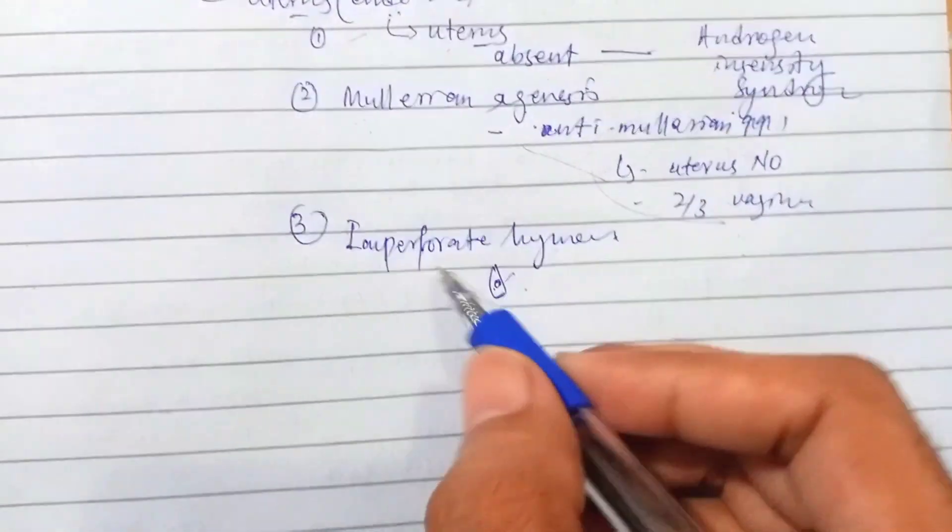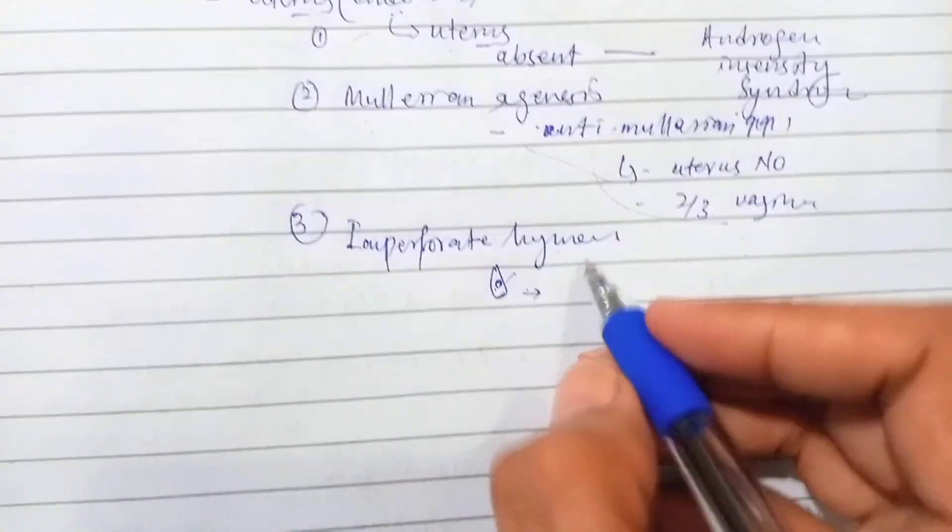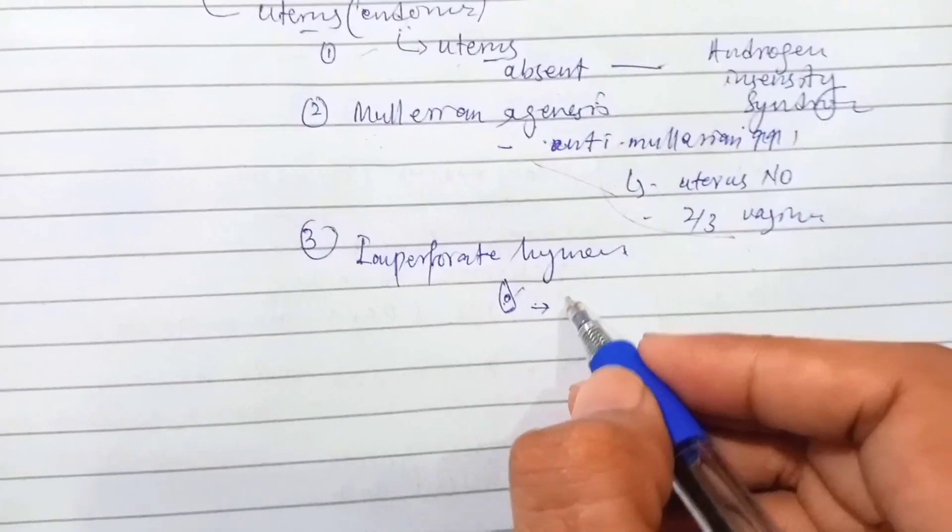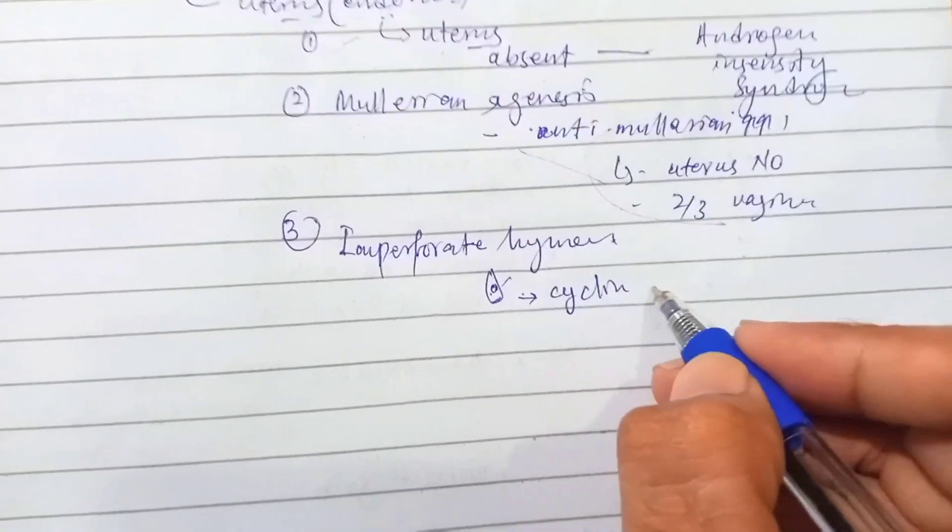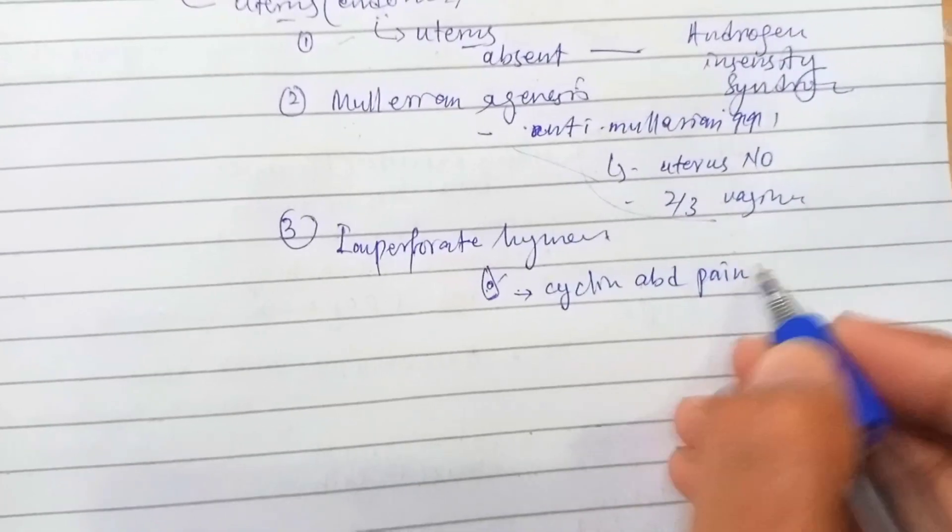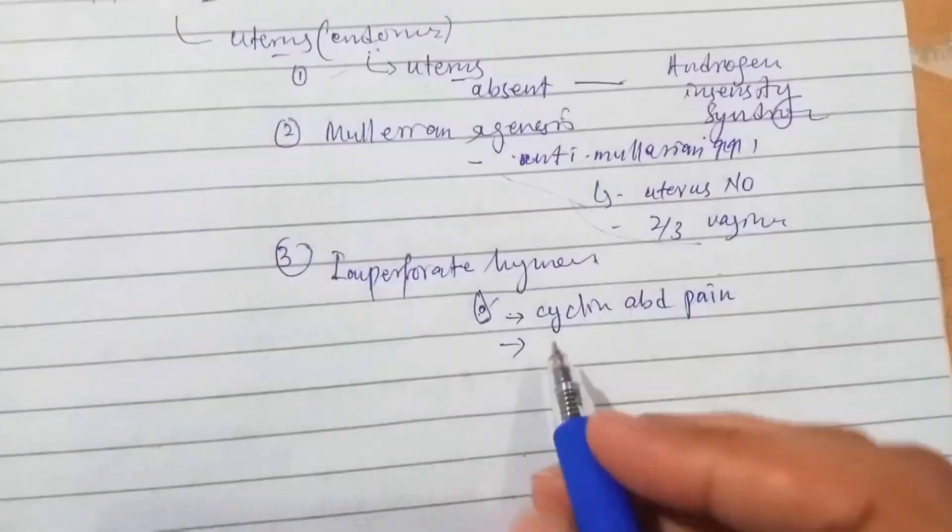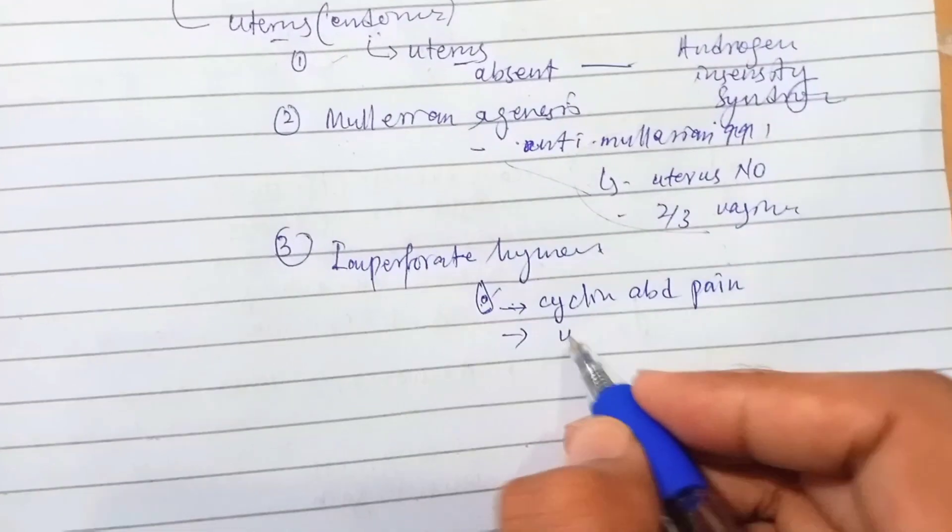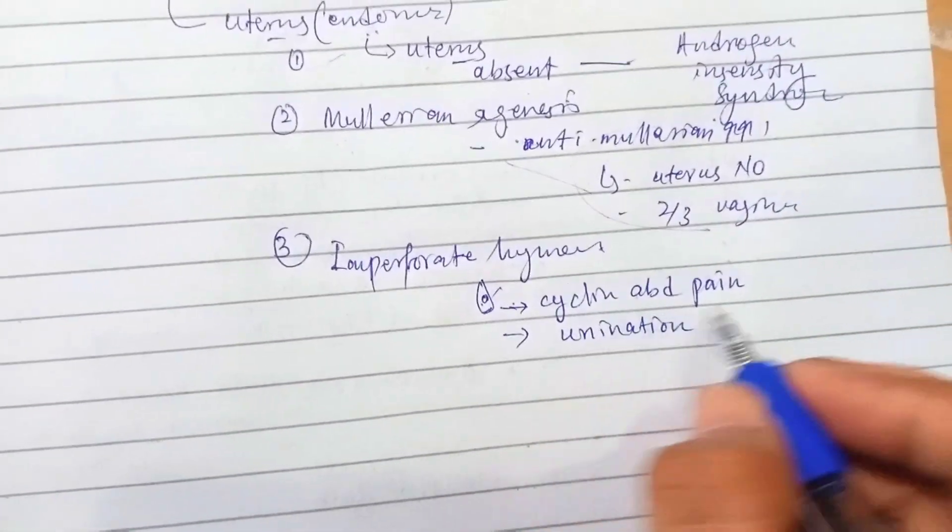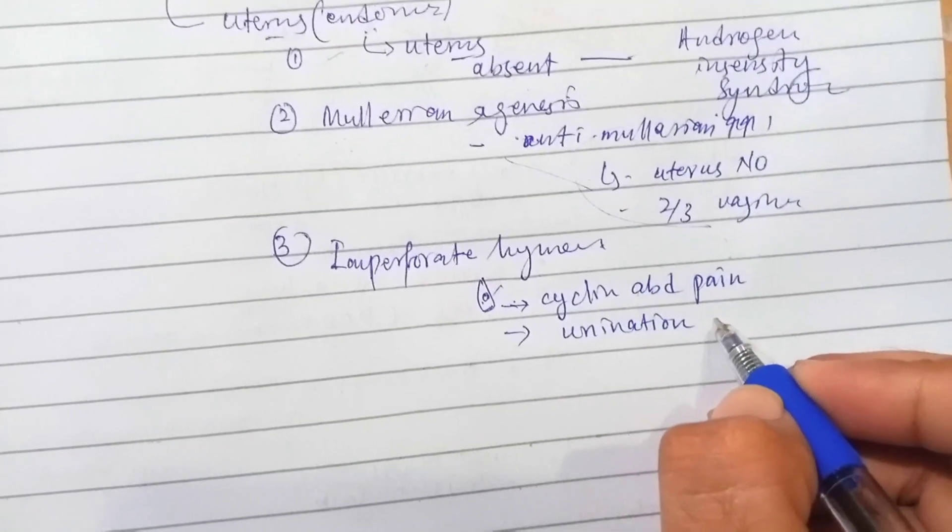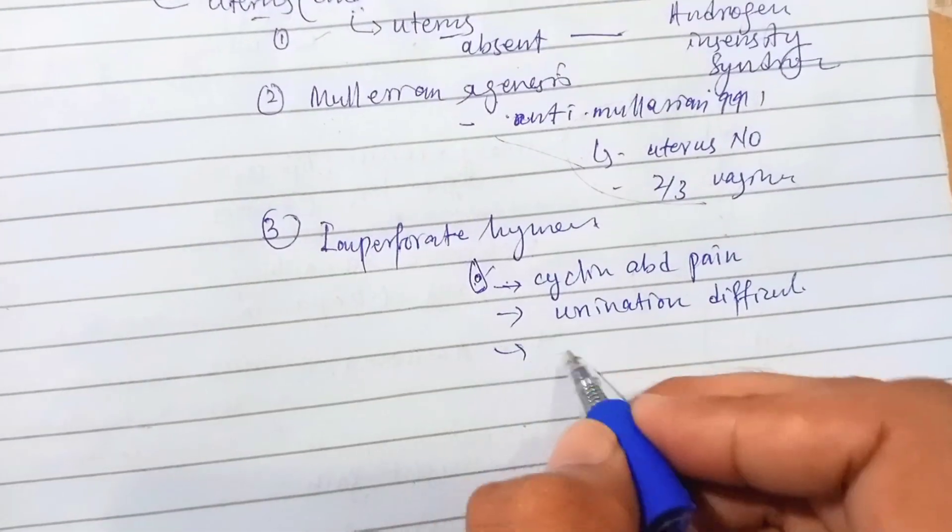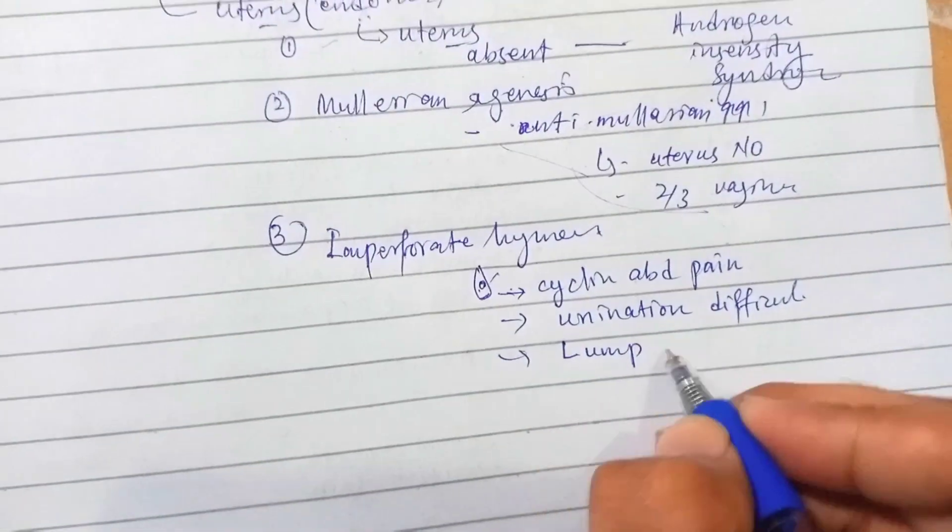So we can mistakenly say that there is amenorrhea. For imperforate hymen, you know the history questions or complaints are: there is cyclic abdominal pain due to backflow pressure of the menstrual blood, and urination difficulty that is affected by the pressure on the bladder, and there is a lump in the abdomen.